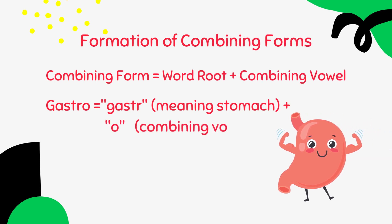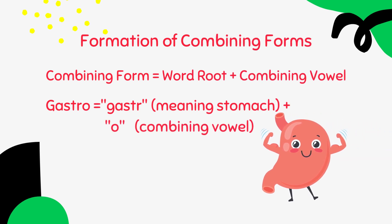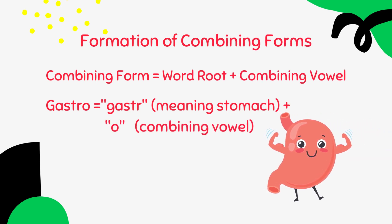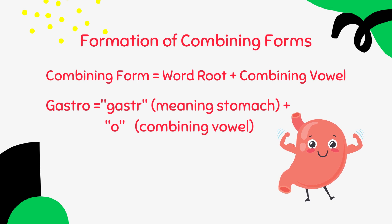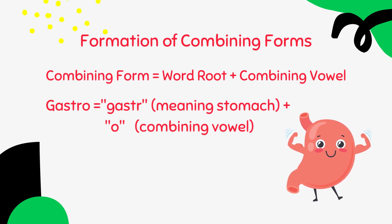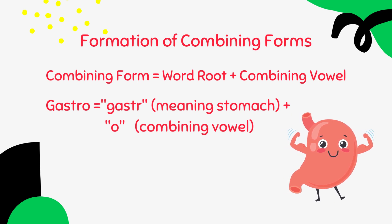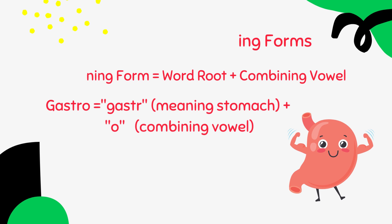Let's see how combining forms are created. Take the root word gaster, meaning stomach, and add the combining vowel O. The result is gastro. Here are some common examples of combining forms.